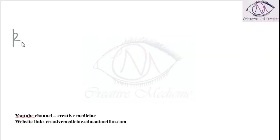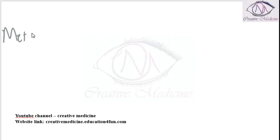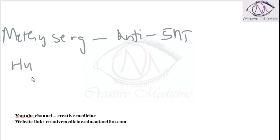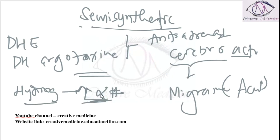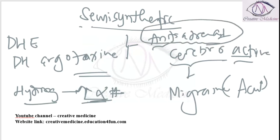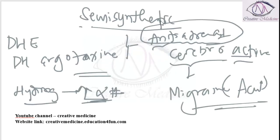Bromocriptine is another semi-synthetic ergot derivative; it is a dopamine agonist and is used in parkinsonism. Methysergide is mainly an anti-serotonergic agent. Hydrogenation of ergot alkaloids decreases vasoconstrictor activity while increasing alpha-blocking property, making them anti-adrenergic and cerebroactive, and thus useful in the acute attack of migraine.